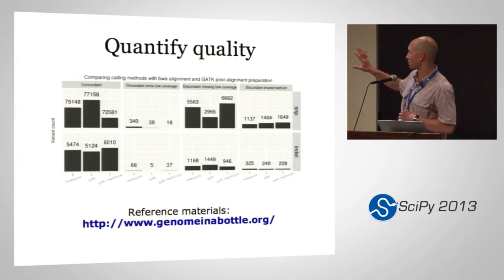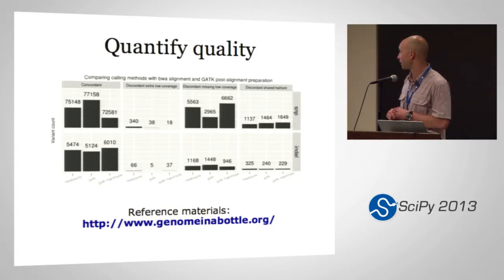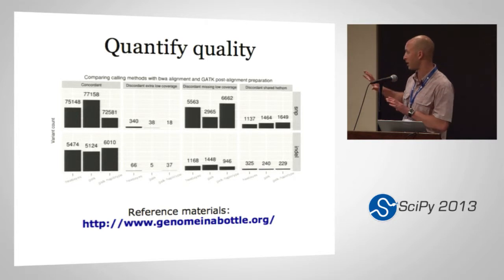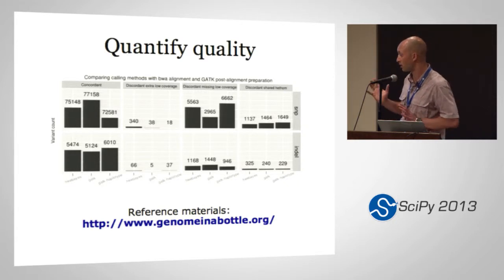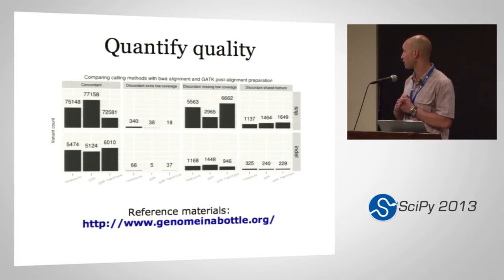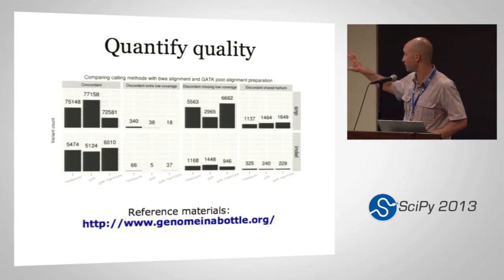To demonstrate what I mean by quality, this is a plot looking at three different variant calling approaches and examining which variants are concordant versus discordant. The details aren't really important — what matters is that this lets you assess how well you're doing with each of the callers, broken down by different regions where you're having problems. For instance, some callers have problems in low coverage regions. It also splits by SNPs and indels, so you can look at different classes of variants and discover which caller is doing best. We're lucky to work with the National Institute of Standards and Technology and their Genome in a Bottle project, which provides the underlying reference infrastructure for these comparisons.